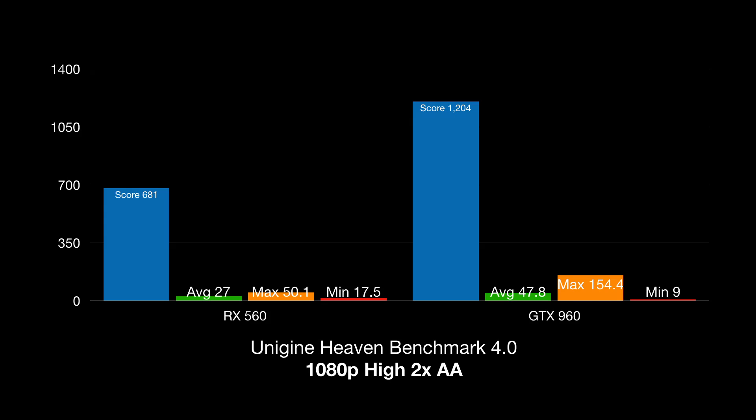The next test I performed was the Unigine Heaven Benchmark version 4.0, at settings of 1080p high with 2x anti-aliasing. The GTX 960 absolutely destroyed the RX 560 in this test. The RX 560 really isn't as good a gaming card as the GTX 960 is — with an overall score of 681 on the RX 560 versus 1204 on the 960. Frames per second: average 27 on the 560 versus 47 on the 960; max 50 on the RX 560 versus 154.4 on the 960; minimum 17.5 on the RX 560 and 9 on the 960.